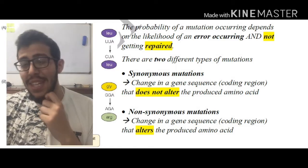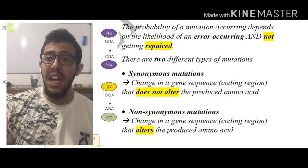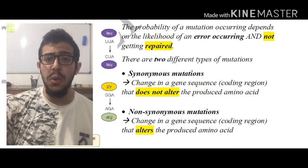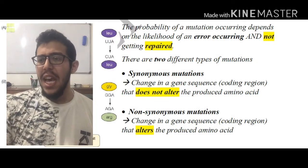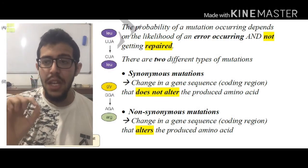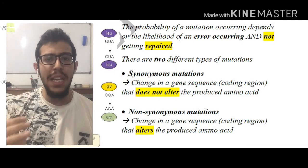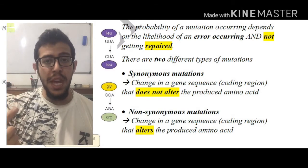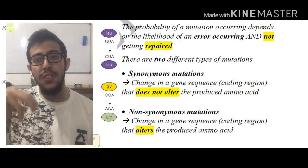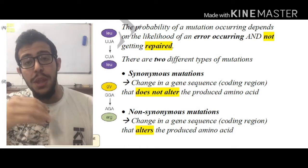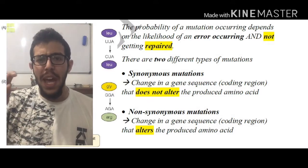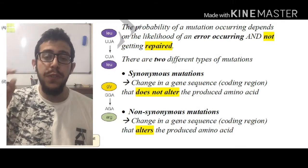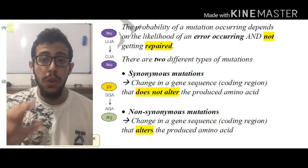The two different types of mutations are as follows. We have synonymous mutations, which are basically changes in a gene sequence — specifically in a coding region, because if it were a non-coding region it wouldn't make any difference — that do not alter the produced amino acid. The vast majority of amino acids have more than one codon that codes for the same protein, so even if one nucleotide changes, the produced amino acid might not differ. If you're interested in codon variation, there is a video on this channel called Codon Usage that I highly recommend.